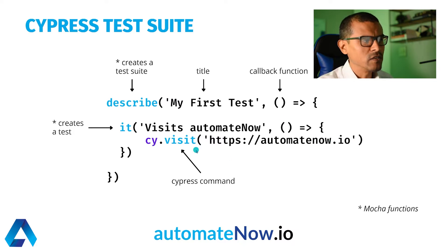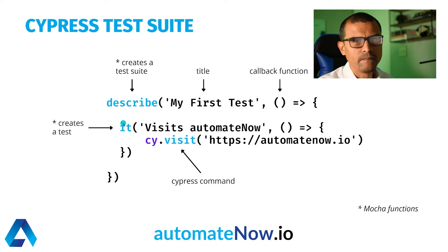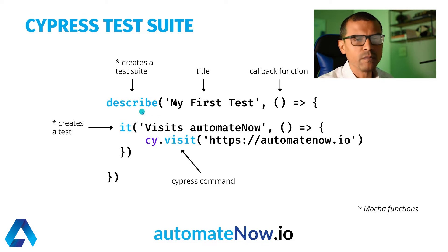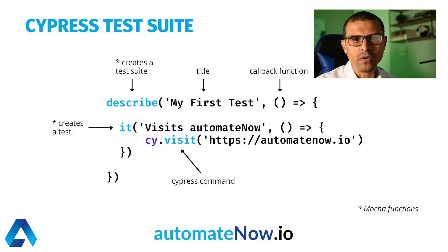I'd like to point out that cy.visit is a Cypress command, while the describe and it functions are part of Mocha. Another thing to note is that we can have multiple tests inside of a suite, so inside of this describe function we can have multiple it functions. Now let's have a look at some sample code.